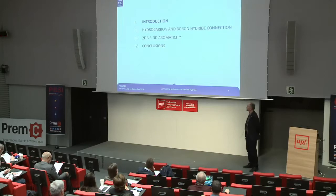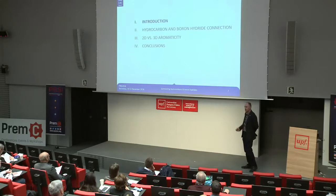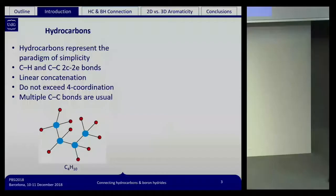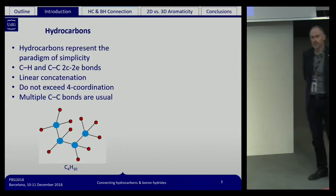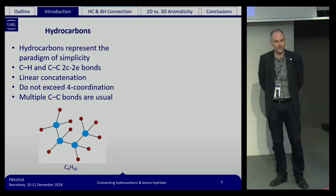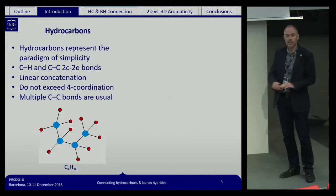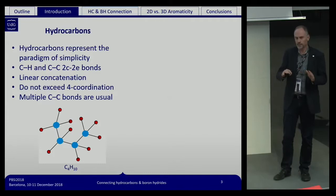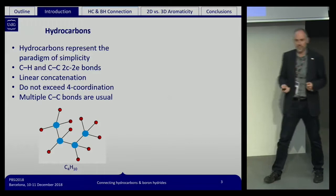This is the outline of the talk. I'll give a brief introduction, then show how we connect hydrocarbon and boron hydride chemistries and the two-dimensional and three-dimensional aromaticity, and finally some conclusions. Let me start by saying that hydrocarbons are the paradigm of simplicity. When we start explaining chemistry to high school students, we start with hydrocarbons because they are simple: they have just two-center two-electron bonds, carbon-carbon or carbon-hydrogen bonds, linear concatenation, and coordination usually does not exceed four. You also have multiple bonds and different hybridization, so the molecular structure of these systems is quite simple.